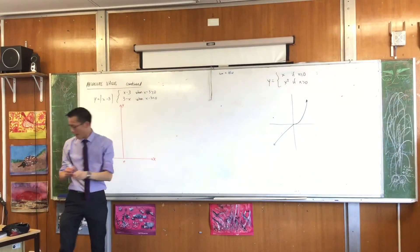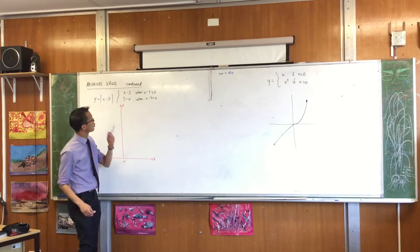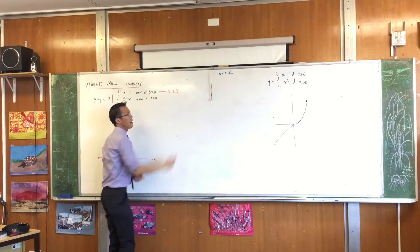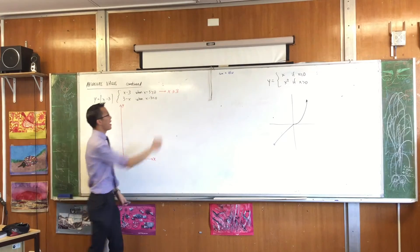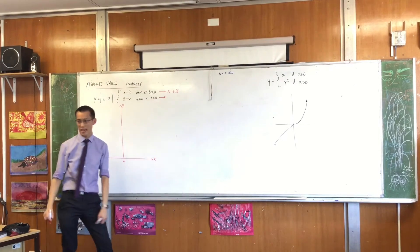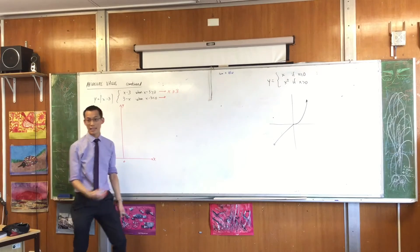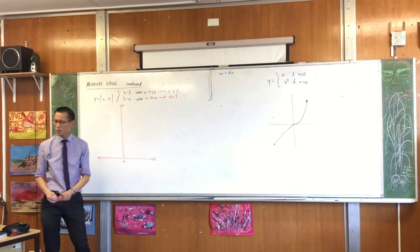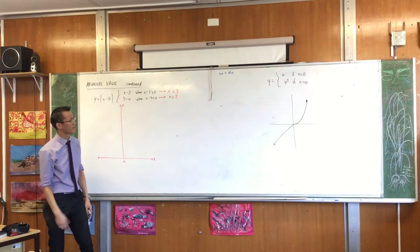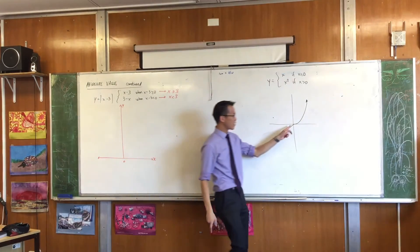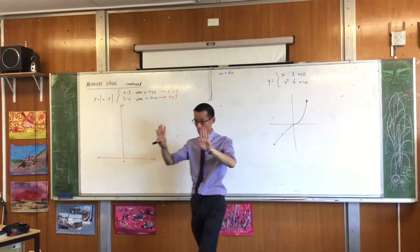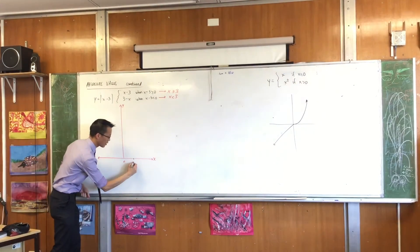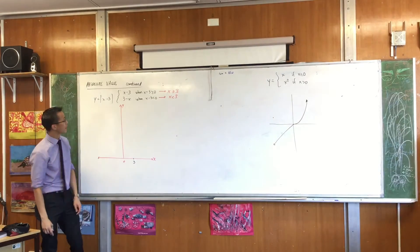So, noting that x minus 3 being greater than or equal to 0 is the same as x being greater than or equal to 3, and noting that this is the same as x is less than 3, you can see x equals 3 is kind of an important point. Just like here, x equals 0 is the junction between two different functions. x equals 3 is the junction over here. So let's just mark in x equals 3.